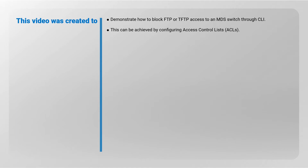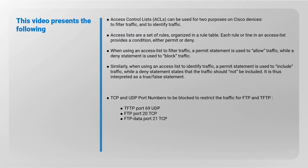This can be achieved by configuring access control lists (ACLs). ACLs can be used for two purposes on Cisco devices: to filter traffic and to identify traffic. Access lists are a set of rules organized in a rule table. Each rule or line in an access list provides a condition — either permit or deny. When using an access list to filter traffic, a permit statement allows traffic while a deny statement blocks traffic.